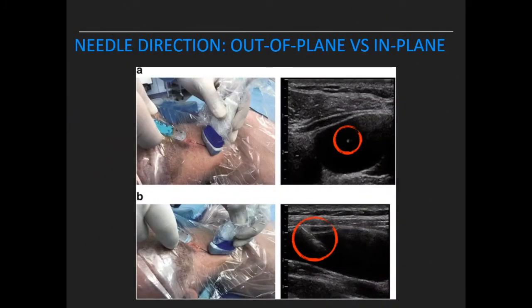In the out-of-plane technique, the needle is seen as a tip in the vessel known as a target sign. In the in-plane technique, the reverberation artifacts of the needle are seen throughout the procedure entering into the vessel.